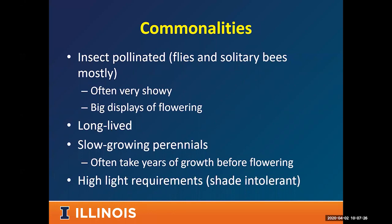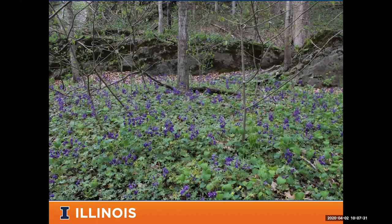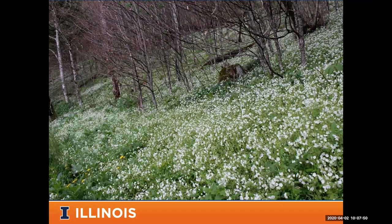This idea of having very showy flowers and big displays is why we love these plants. This is dwarf larkspur — you can see a massive flowering display that really takes your breath away. And here is fringed phacelia, a massive hillside covered in it. Most of them co-flower at the same time, producing tremendous displays.